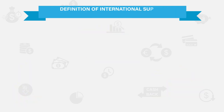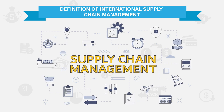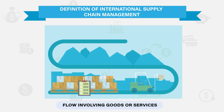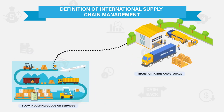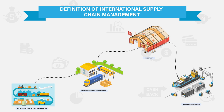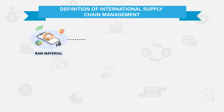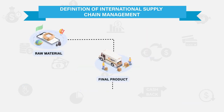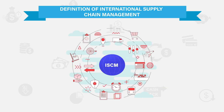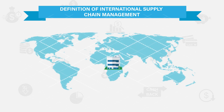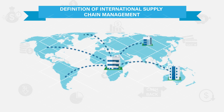The definition of International Supply Chain Management is similar to the one of supply chain management, which is the management of the flow involving goods or services, represented by transportation and storage, by inventory and shipping schedules, beginning with the acquisition of raw materials to providing the final product to the end consumer. In the case of International Supply Chain Management, this flow assumes the involvement of at least one company from abroad, with the purpose of creating a network composed of transnational companies.